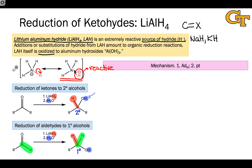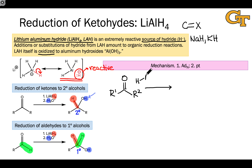Now let's look at the mechanism, using a ketone for illustration — the mechanism for aldehydes is extremely analogous with exactly the same electron flow. The mechanism involves nucleophilic addition of the hydride built into lithium aluminum hydride. Starting from the resonance form with aluminum obeying the octet rule, from the carbonyl's perspective this looks like nucleophilic addition of H-, with both electrons in the Al-H bond headed toward the carbonyl carbon — an ADN elementary step of hydride to the carbonyl carbon within the C=O pi bond.